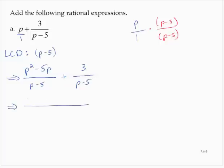I can write this as the single fraction where I'm adding the numerators, p square minus 5p plus 3 over p minus 5.